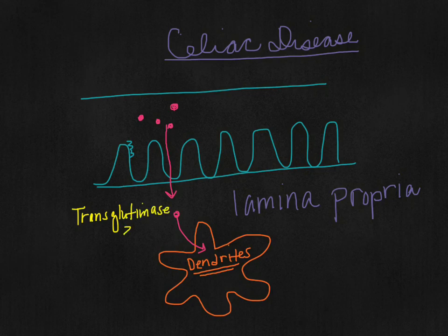Some of it will be converted or deaminated by transglutaminase 2. This deamination gives the gluten peptides a negative charge. Normally, transglutaminase 2 is not extremely active. It becomes more active during an immune or inflammatory response.